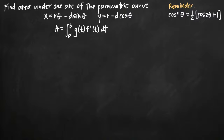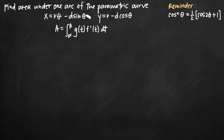Today we're going to be talking about how to find the area under one arc of the parametric curve. In this particular problem, we're given the parametric curve defined as x equals r times theta minus d sine theta, and y equals r minus d cosine theta. The variable here is theta, and r and d are constants.